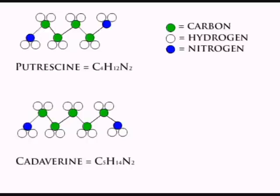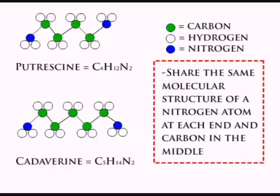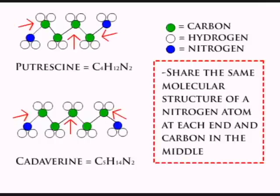Putrescine and cadaverine are composed of carbon, hydrogen, and nitrogen. They share the same molecular structure of a nitrogen atom at each end and carbon atoms in the middle. Each carbon and nitrogen atom is bonded with two hydrogen atoms.